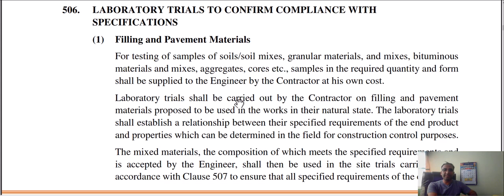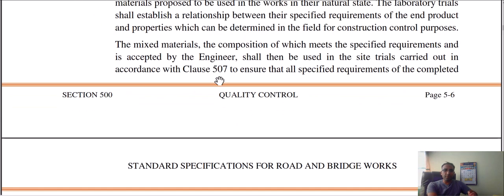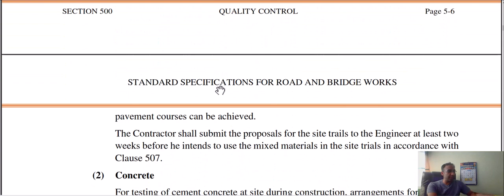Laboratory trials shall be carried out by the contractor on filling and paving material proposed to be used in the work in its natural state. The laboratory trials shall establish a relation between the specified requirement and the property which can be determined in the field for construction and quality control purposes. The contractor shall submit the proposal for the site trials to the engineer at least two weeks before he intends to use mixed material in the site trials, in accordance with clause 57.